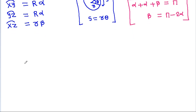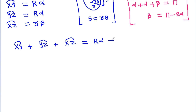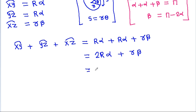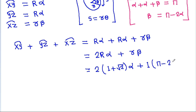And we have to find arc xy plus arc yg plus arc xg, which will be equal to R·alpha plus R·alpha plus r·alpha plus small r·beta. That is 2 times R, which is 1 plus root 2, times alpha plus small r·beta. And since small r is 1 and beta is pi minus 2·alpha, we get 2 times (1 plus root 2) times alpha plus 1 times (pi minus 2·alpha).